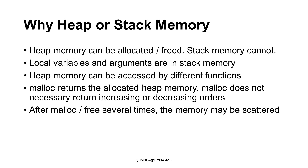Why are the addresses scattered? Why are the memory addresses of the list nodes not increasing or decreasing? First, malloc returns the address of available memory and does not necessarily return increasing or decreasing addresses. Another reason is that allocated memory may be freed. After malloc and free are called several times, the memory will likely be scattered.